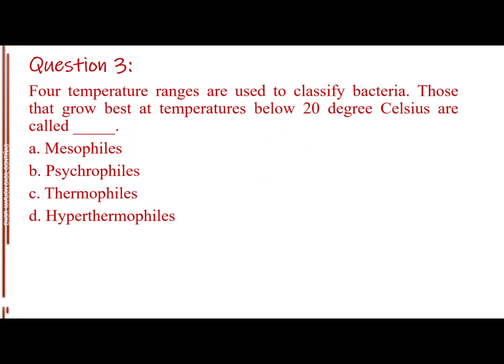Question number 3. Four temperature ranges are used to classify bacteria. Those that grow best at temperatures below 20 degrees Celsius are called blank. Letter A, mesophiles. Letter B, psychrophiles. Letter C, thermophiles. Letter D, hyperthermophiles. The answer is Letter B, psychrophiles.